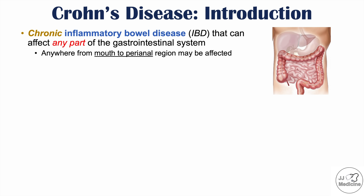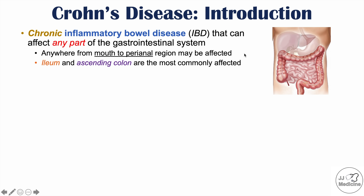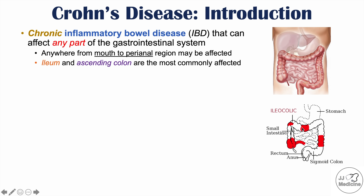Crohn's disease can affect any part of the gastrointestinal system, anywhere from the mouth to the perianal region. What we most commonly see is that the ileum — the last part of the small intestine that joins the large intestine — and the ascending colon are the most commonly affected portions. Some other parts of the large intestine, including the transverse and descending colon, can also be affected.